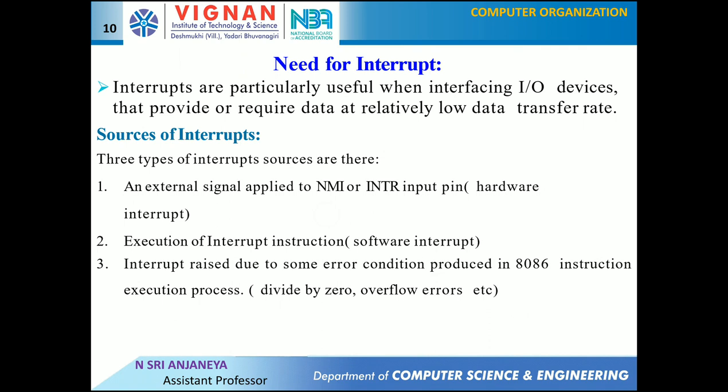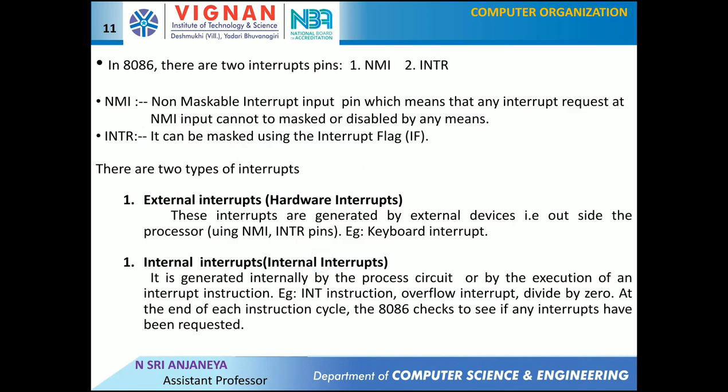If you attempt to divide an operand by zero, the 8086 will automatically interrupt the currently executing program. The 8086 can receive interrupts through two pins: NMI and INTR. NMI is the Non-Maskable Interrupt input pin — any interrupt request at the NMI pin cannot be masked or disabled; whatever interrupt is received through NMI cannot be ignored by the processor. Interrupts through the INTR pin can be masked using the interrupt flag. If IF equals 1, the interrupt is handled; if IF equals 0, the interrupt is masked. There are two types of interrupts: external interrupts (also called hardware interrupts) and internal interrupts (also called software interrupts).